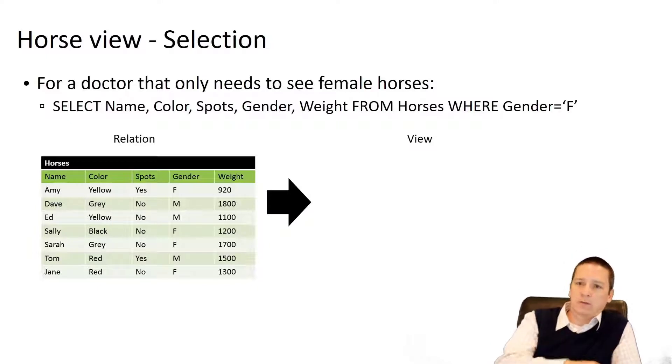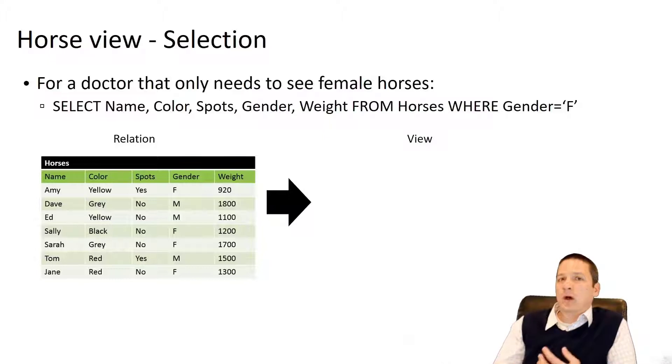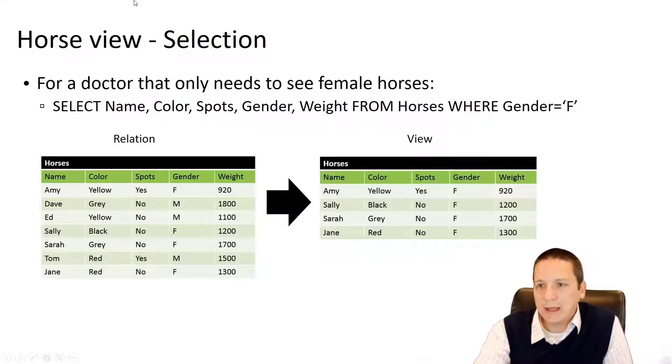Thinking back to our horse model from a couple of classes ago, we created all these attributes like name, color, spots, gender, and weight of our horse in this relation. But imagine we had a doctor coming to check if our horses are pregnant. We only need to see our female horses. So we can create a view of this data using our select operator that returns only female horses. This is a sneak peek of the SQL code that would take this source relation called horses and return only the tuples where this condition is true.